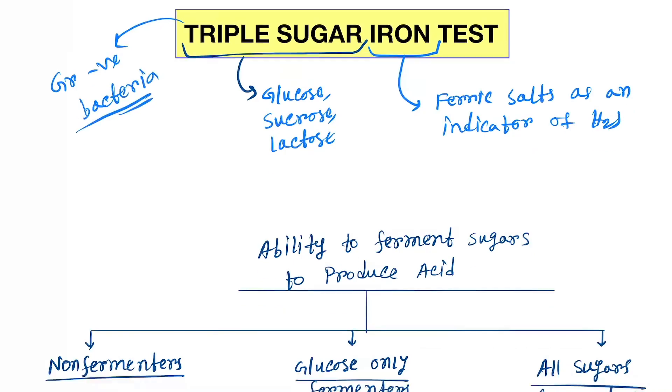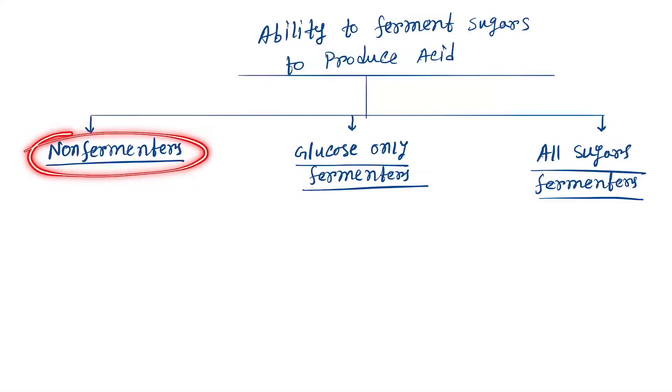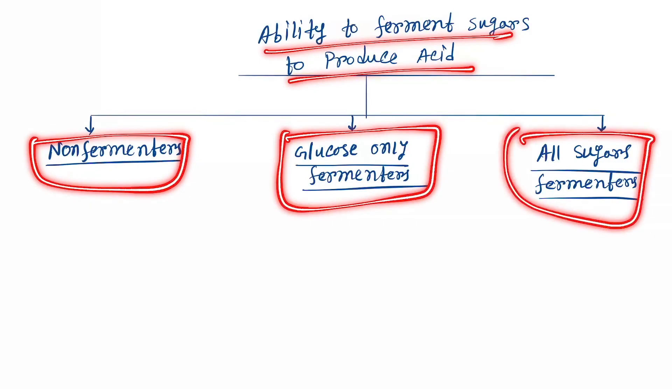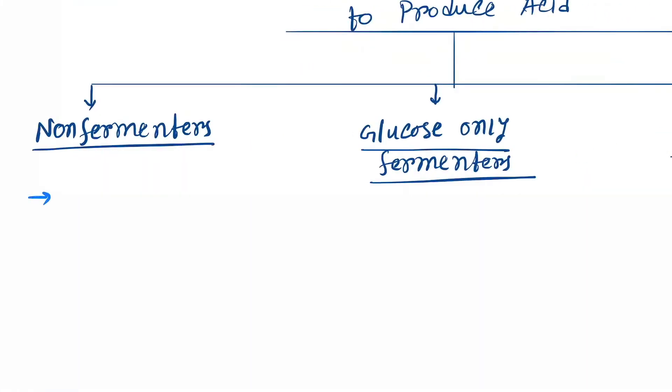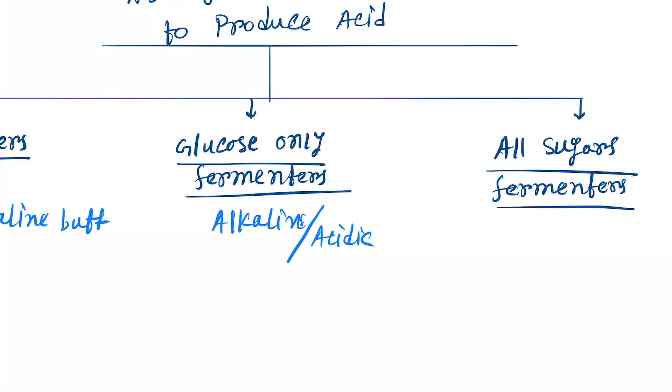Let's see the results. First, the ability to ferment sugars to produce acid. Non-fermenters produce alkali or alkaline. Glucose-only fermenters produce alkaline slant and acidic butt. All sugar fermenters produce acidic slant and acidic butt. First let's discuss the basics, then we'll discuss each one in detail.